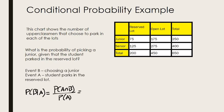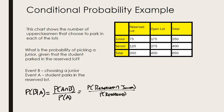It might be more helpful to rewrite A and B in terms of juniors and lots. So what's the probability that a student parks in the reserved lot and is a junior, divided by the probability that they park in the reserved lot? First, let's find the probability that they are reserved and a junior. There are 75 students that are juniors parking in the reserved lot, so 75 out of 650 is our numerator.